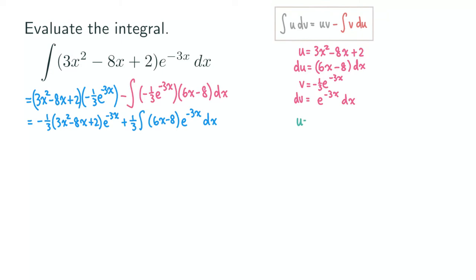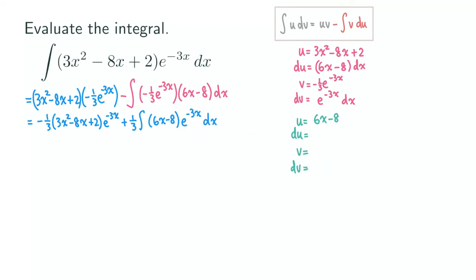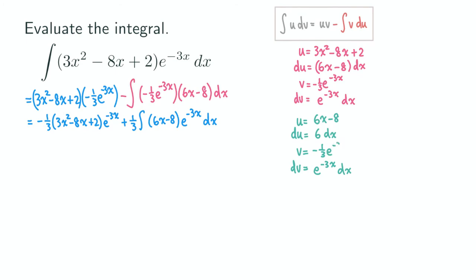Let's use a different color and set up integration by parts again, reusing the variables. We choose u to be the polynomial, so u equals 6x minus 8. The dv is e to the negative 3x dx. Differentiating u gives du equals 6 dx. Integrating dv gives v equals negative 1 third e to the negative 3x.